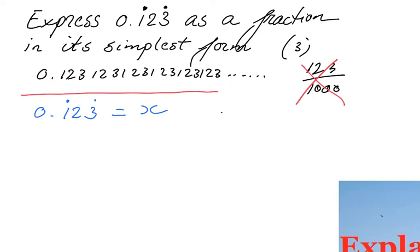Listen carefully to what I'm going to say now. The next step: you want to get the entire recurring part on the left side of your decimal point. In this particular example, what is recurring? It is 1, 2, 3 — repeating. So I want to get 1, 2, 3 on the left side of my decimal point.